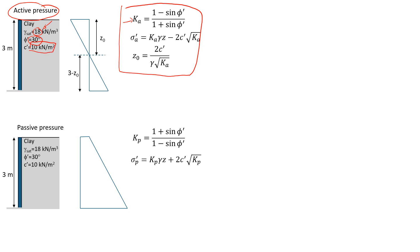We'll start with the coefficient of active pressure. It will be 1 minus sine of 30 degrees divided by 1 plus sine of 30 degrees. That gives us a value of 0.33.